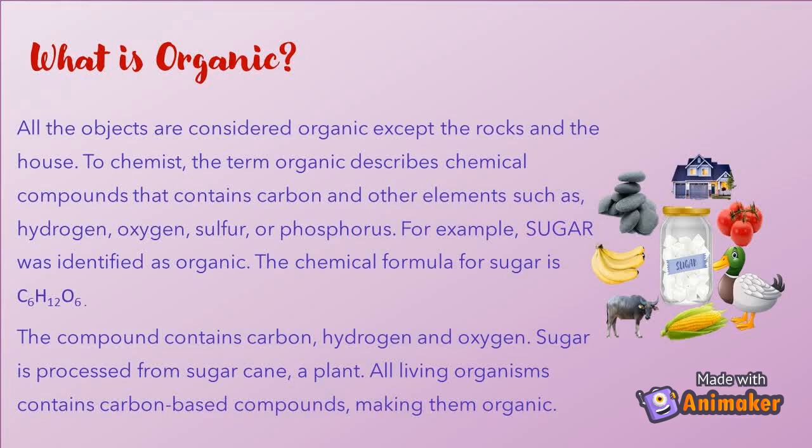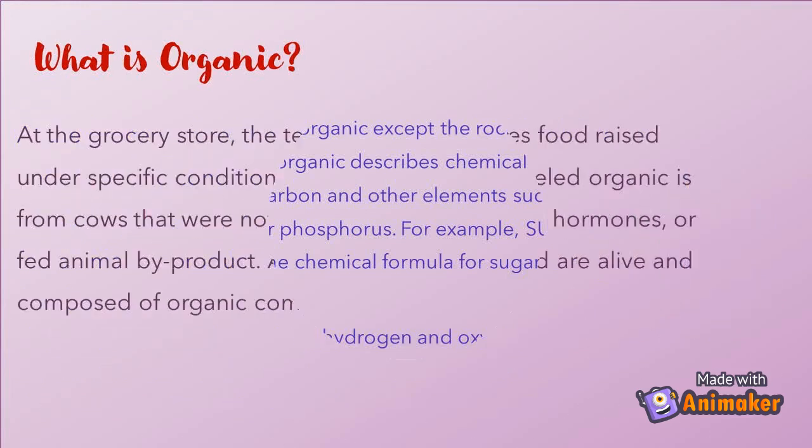For example, sugar was identified as organic. The chemical formula for sugar is C6H12O6 — the compound contains carbon, hydrogen, and oxygen. Sugar is processed from sugar cane, a plant. All living organisms contain carbon-based compounds, making them organic.